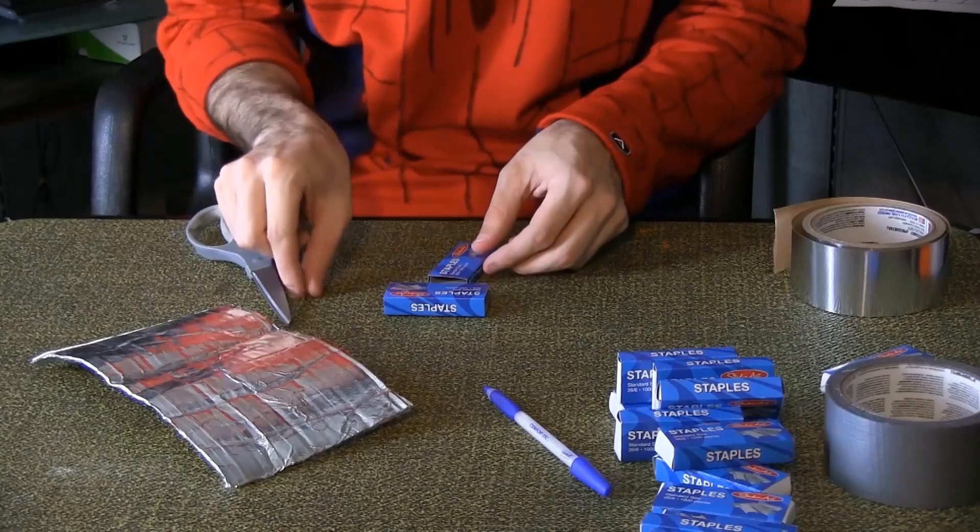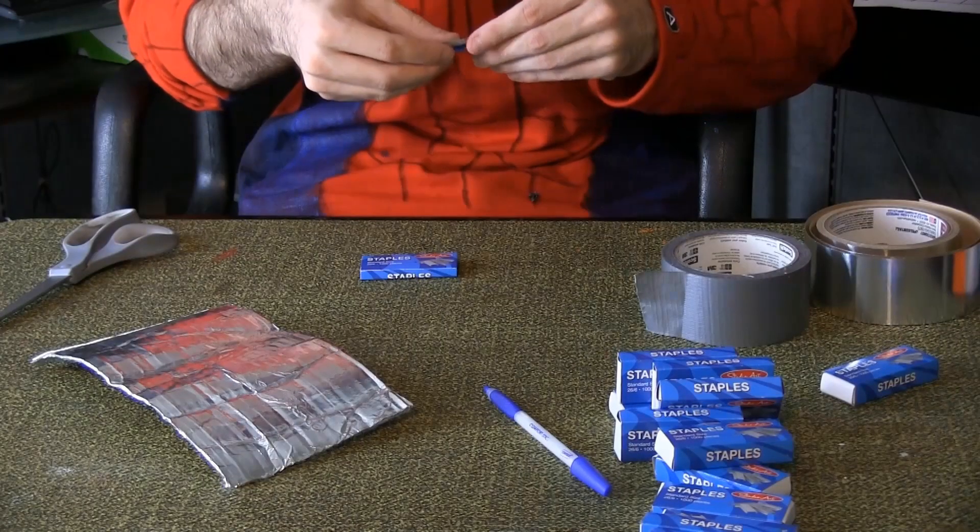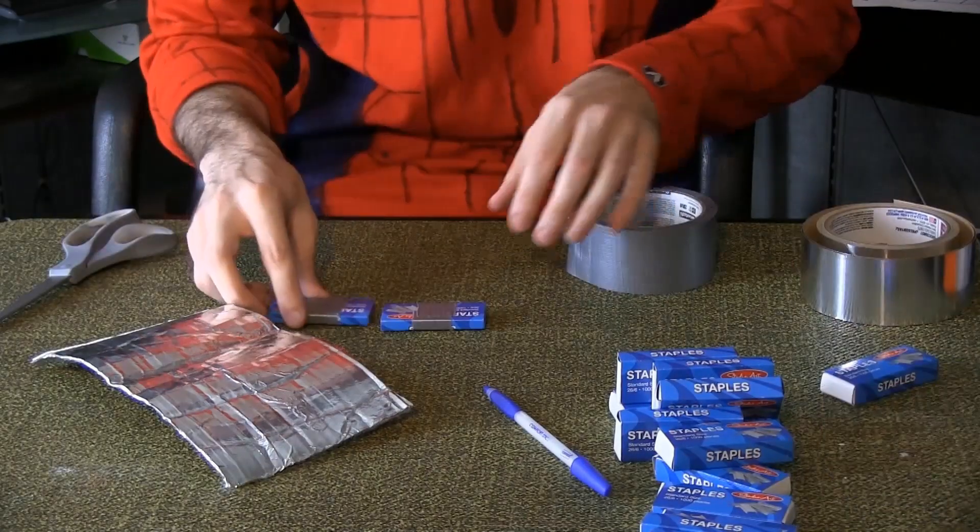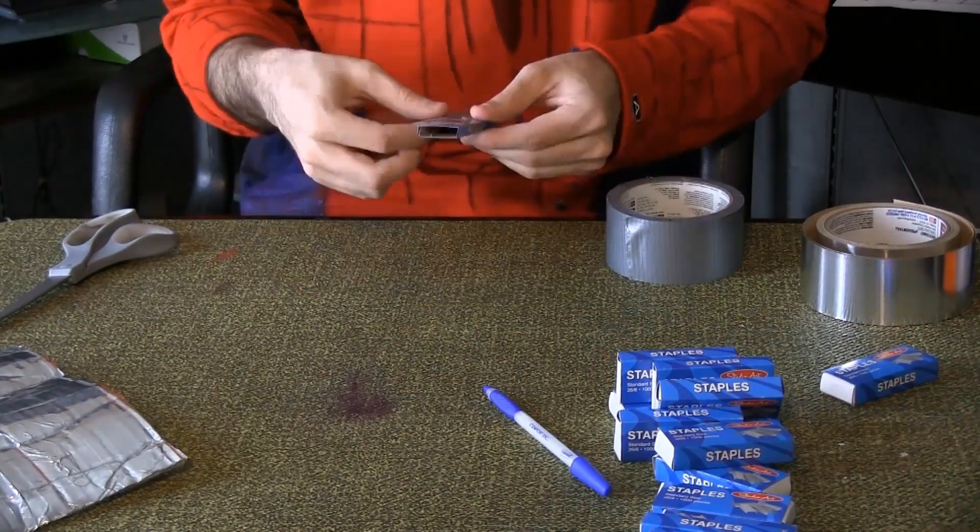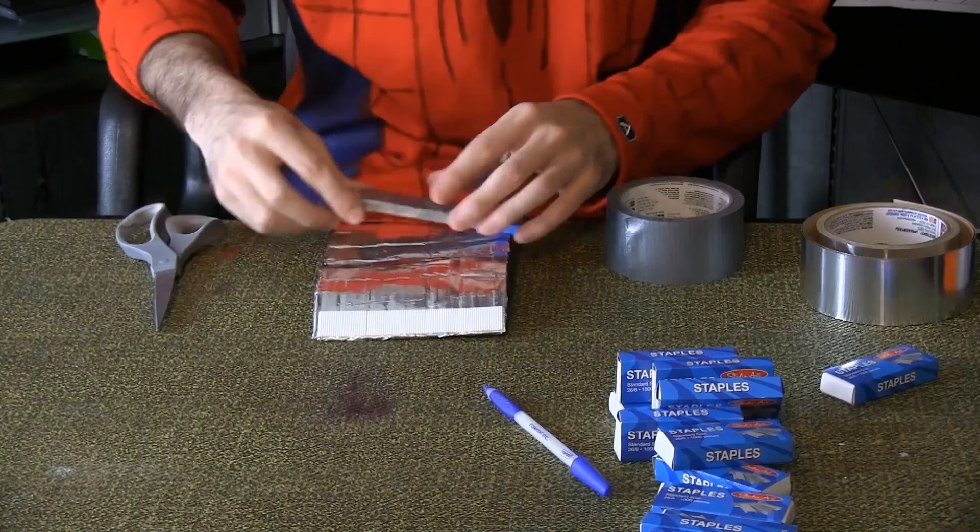Place the two halves together to create a narrow box. Duct tape the two pieces together, though I'm sure scotch tape would work as well. Repeat for a second staple box. Line up the two boxes end to end and duct tape them together. Measure them to the length of your wrist pieces and cut the box to the same length.